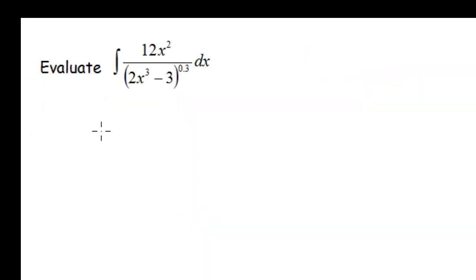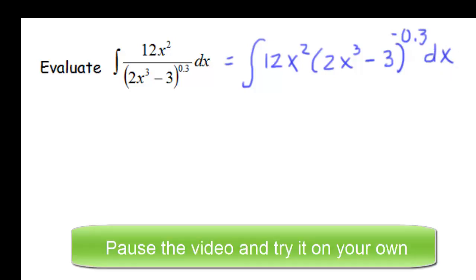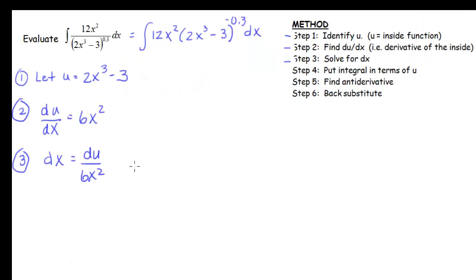Our last example for this video we have 12x²/(2x³ - 3)^0.3. The first thing I might do is rewrite this because when I had powers of x in the denominator it was easier for me to use the power rule if I rewrote those so that they had negative powers of x in the numerator. I want you to pause the video and do steps 1, 2, and 3 and then play and check to see if you have it started correctly.